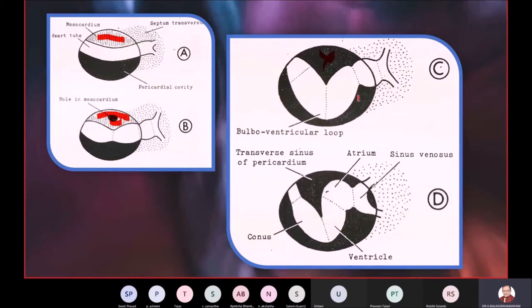Now that loop begins at the junction between the bulbus cordis and the ventricle. Hence, this loop is called the bulboventricular loop. The loop is so designed that the convexity of the loop is below and the concavity is above.